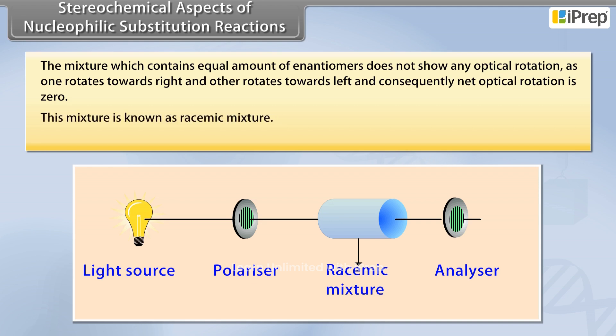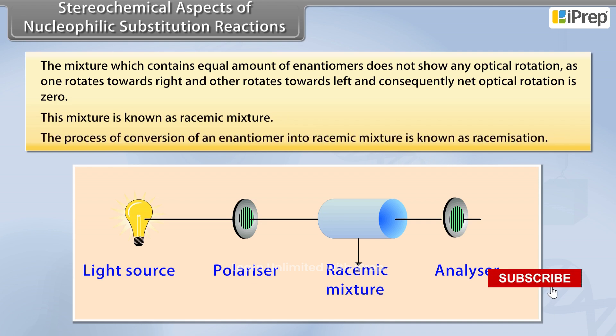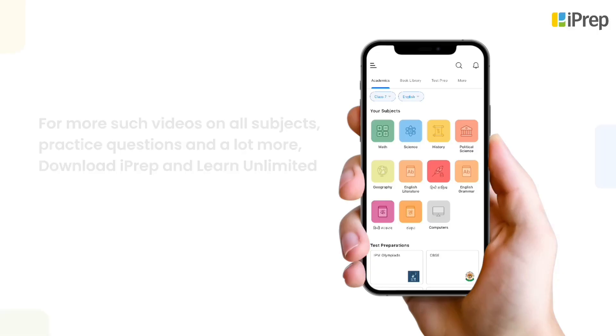This mixture is known as a racemic mixture. The process of conversion of an enantiomer into a racemic mixture is known as racemization.